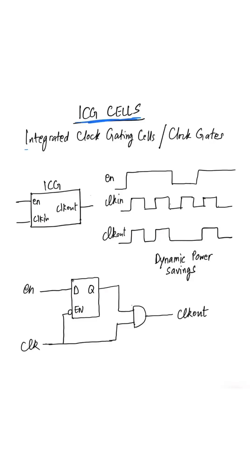An ICG cell is an integrated clock gating cell or it can be simply called a clock gate. It is one of the most important design elements especially in low power design.